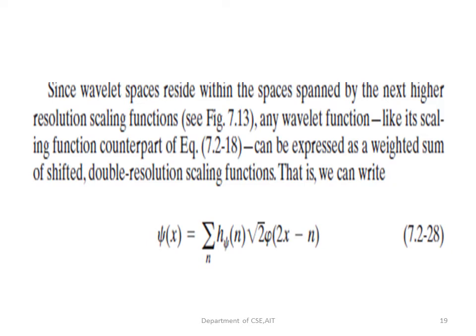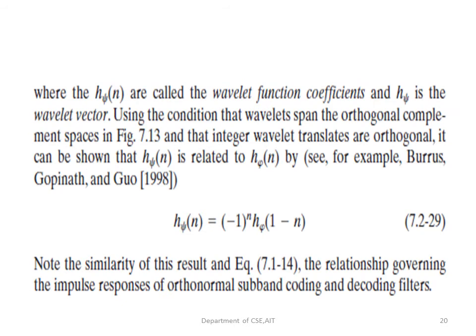Since the bigger wavelet spaces consist of smaller spaces, any wavelet function, like the scaling function, can be expressed as a weighted sum of shifted double-resolution scaling functions. That is, ψ(x) = Σ_n h_ψ(n) √2 ψ(2x − n). From this equation, h_ψ(n) is the wavelet function coefficient and h_ψ is the wavelet vector.